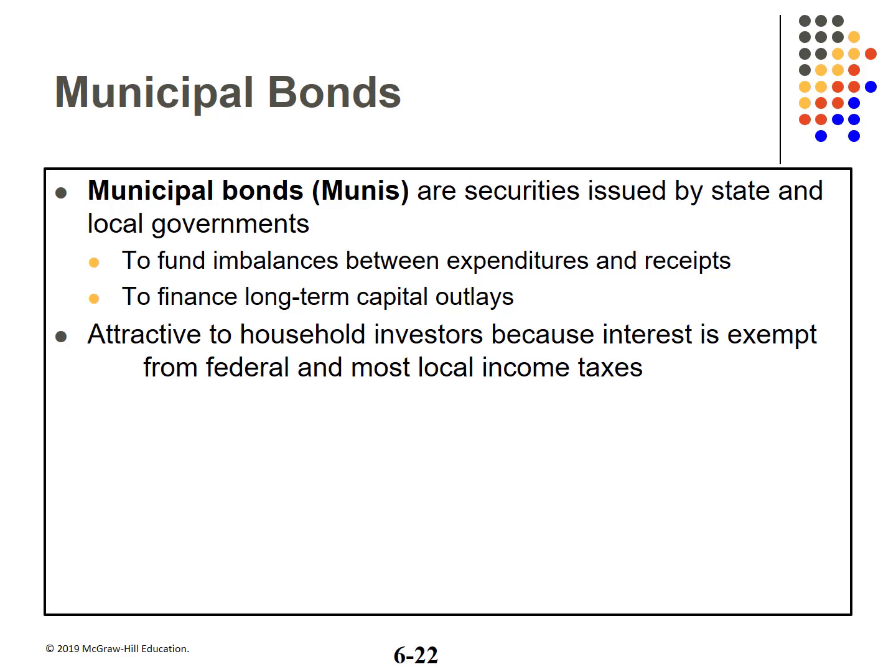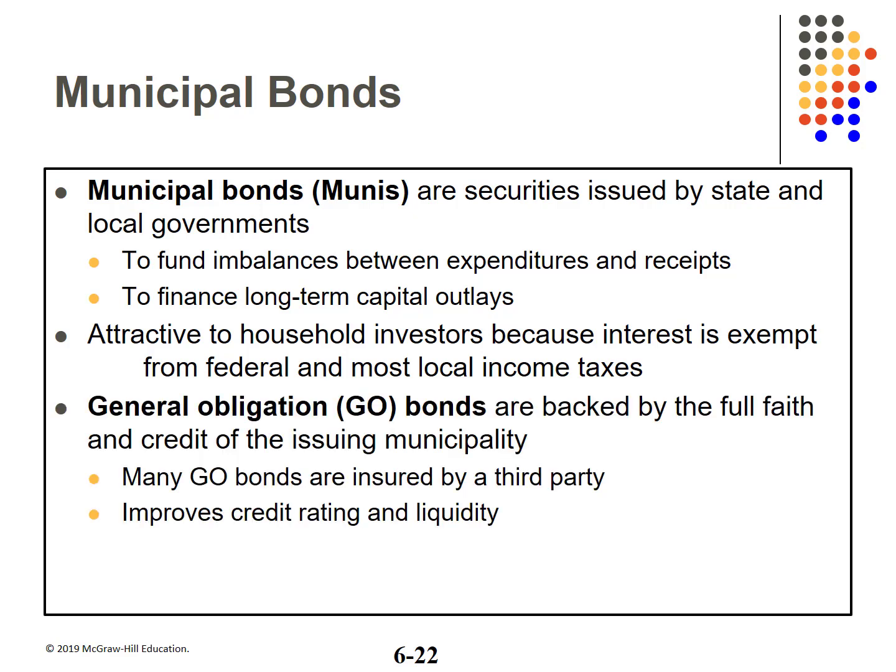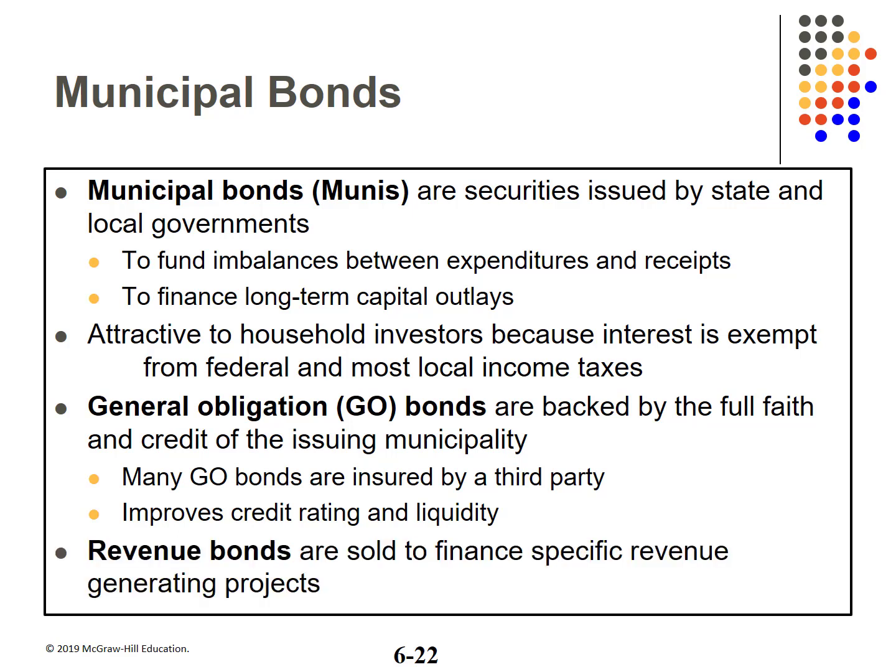Municipal bonds are issued by state and local governments to raise funds for various projects and to support operations. Munis are very attractive, especially to high tax rate investors, as the interest is tax-exempt from federal income tax and from state tax in the state of issue. General obligation bonds are general debt backed by the credit of the issuer — many are insured, improving their credit rating. Revenue bonds are sold to finance a specific revenue-producing project, the revenue from which will be used to pay interest and retire the bonds. The majority of munis are revenue bonds.